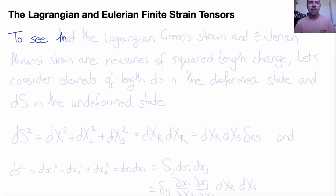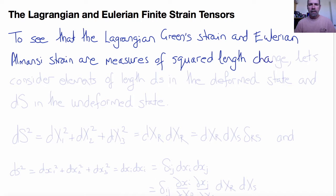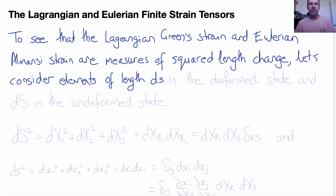But first, let's demonstrate that, as we said last time, the Lagrangian Green strain and the Eulerian Almansi strain are respectively Lagrangian and Eulerian measures of squared length change with respect to undeformed squared length. The square comes about from the fact that we needed to take F-transpose F or FF-transpose to eliminate the rotation and be left with something that only depends on stretch. You can think of this as being a consequence of Pythagoras' law.